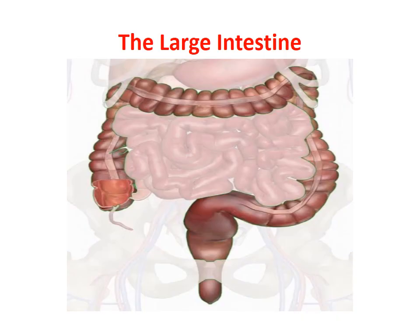The small intestine is the part where the final digestion of food happens. All the remaining components of food — whether they are fats, proteins, or carbohydrates — are digested by the pancreatic juice. After that, the digested part of food is absorbed by the small intestine.